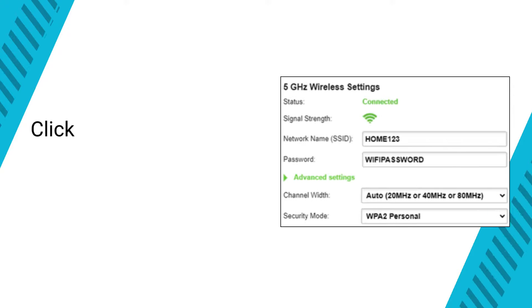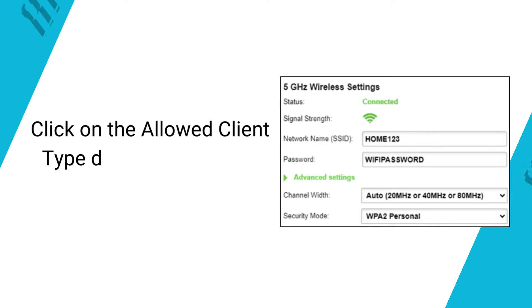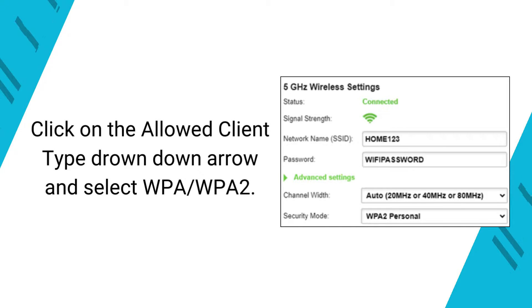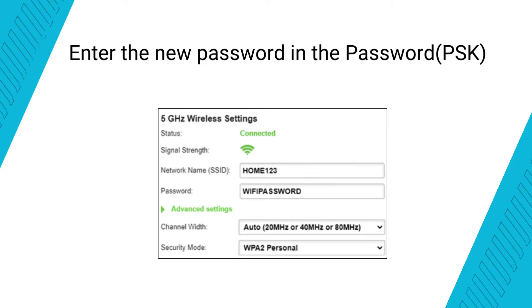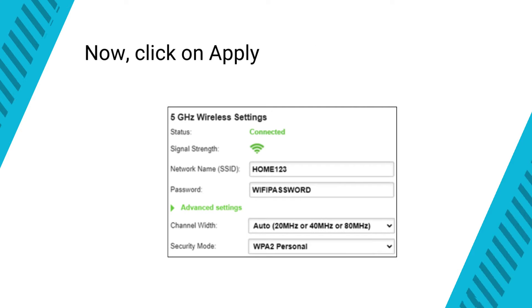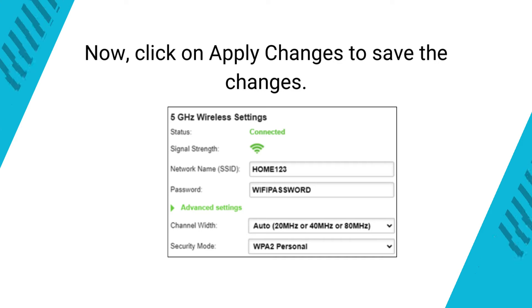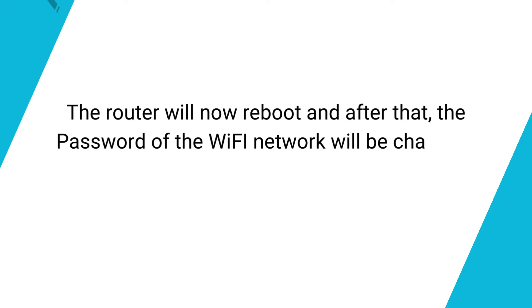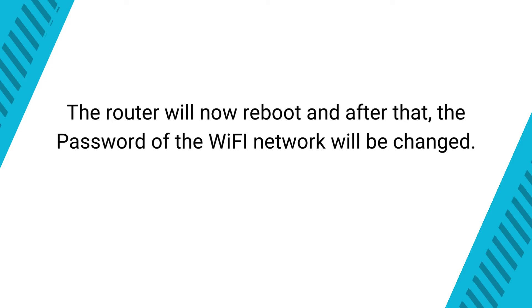Click on the allowed client type dropdown arrow and select WPA/WPA2. Enter the new password in the Password PSK field. Click on Apply Changes to save the changes. The router will now reboot, and after that, the password of the Wi-Fi network will be changed.